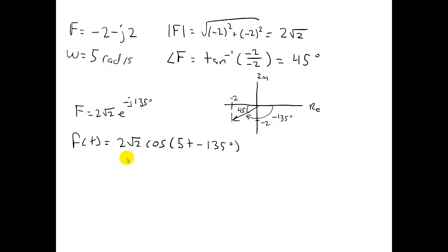I can also rewrite this slightly different, although this way is also correct. I can break up the minus 135 degrees into minus 180 degrees plus 45 degrees. So I can rewrite F of t as 2 root 2 cosine of 5t plus 45 degrees.